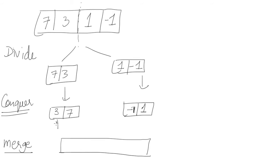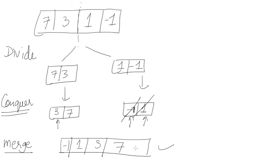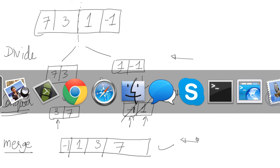The merge part works using pointers at the heads of each list. You compare the head elements: -1 and 3, realize -1 is smaller, put it in output and move that pointer. Then compare 3 and 1, put 1 in output. With no more elements in that list, you append 3 and then 7. That's essentially the idea of merge sort: divide, conquer via recursion, then merge.